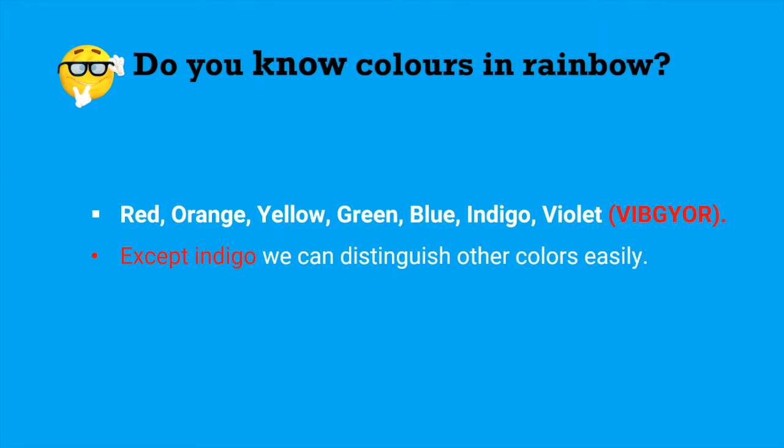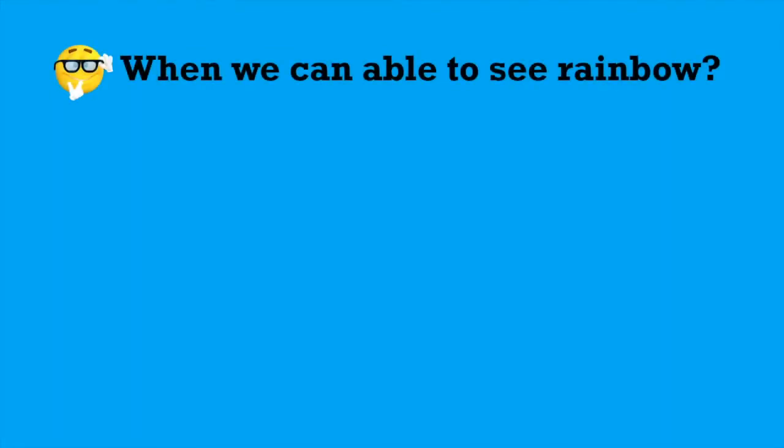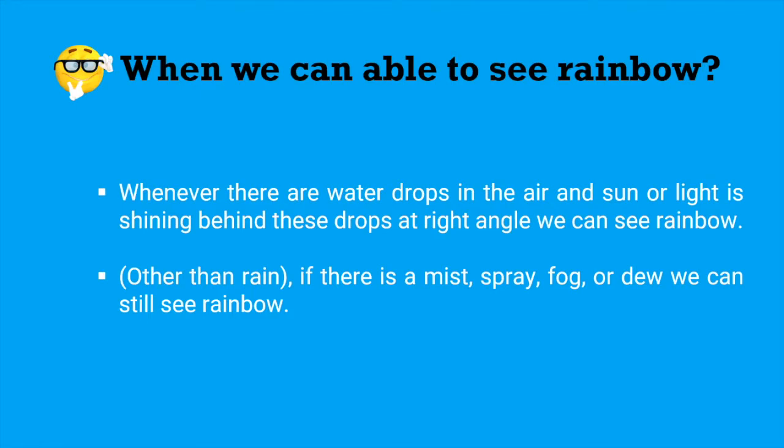Now when can we see rainbow? Whenever there are water drops in the air and sun or light is shining behind these drops at right angle, we can see rainbow. Other than rain, if there is a mist, spray, fog or dew, we can still see rainbow.